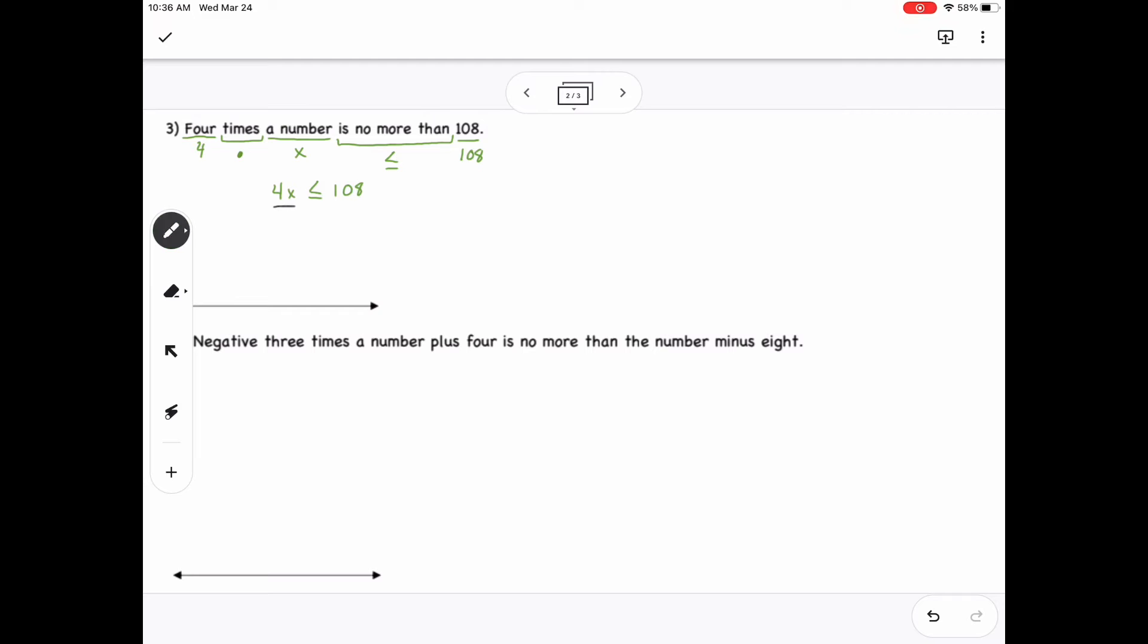And then from there, I'll need to divide both sides by 4, which gets me x is less than or equal to 27. So then on our number line, 0 is the left of 27. I'll have a closed circle at 27, and then everything to the left will be true.